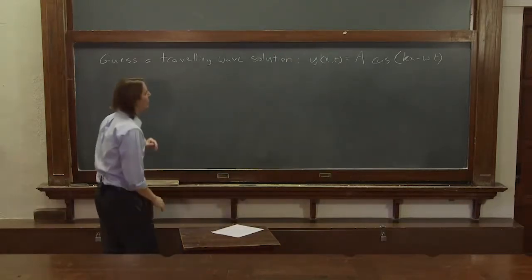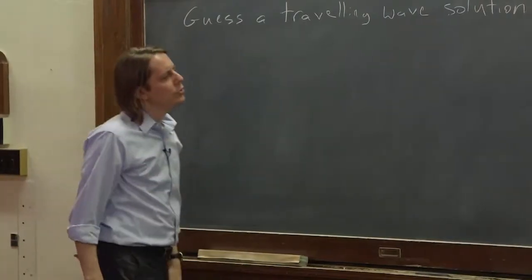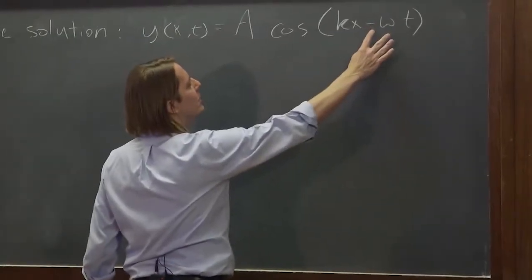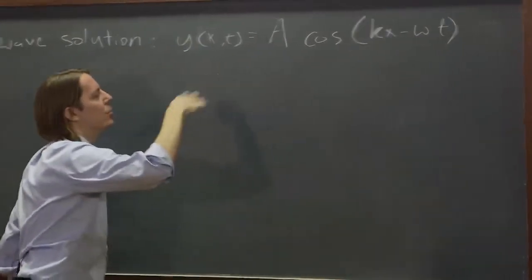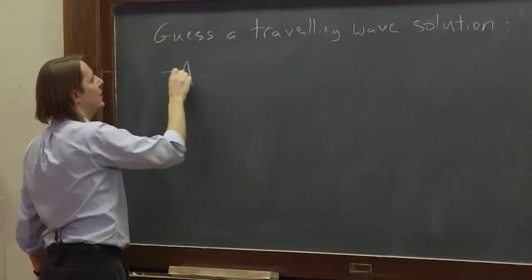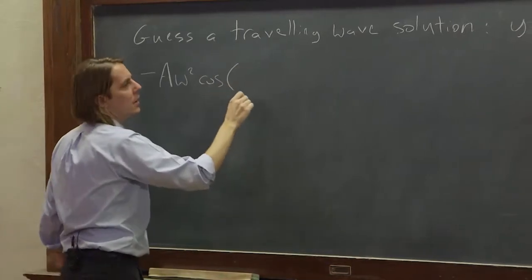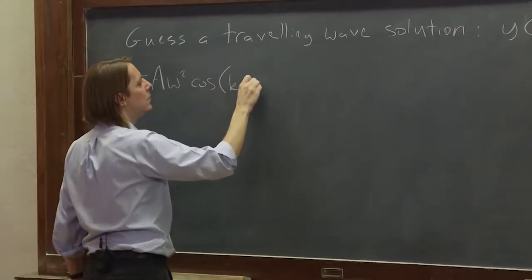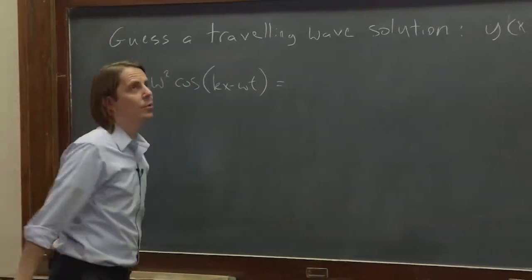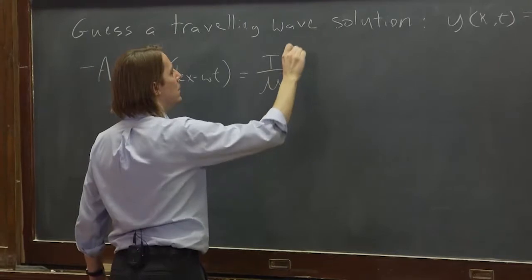So we're going to plug that in, let's do it from memory. So it was d²y/dt². Two time derivatives, we're each going to pull out a minus omega, so that's going to become omega squared. Cosine will go to negative cosine, so we're going to have minus A omega squared back to cosine kx minus omega t. And that was equal to T over μ times